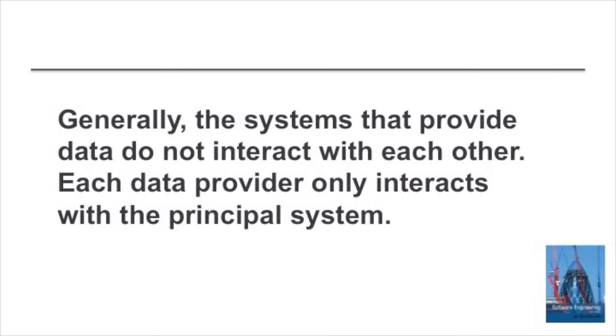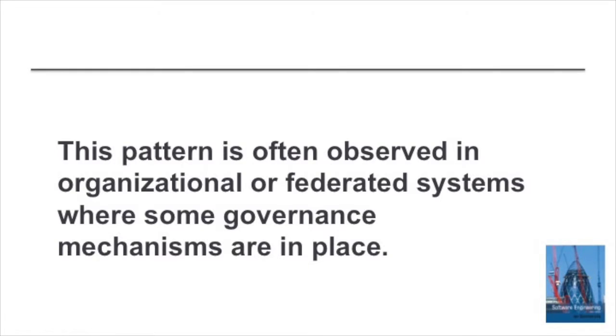The data may be queried directly — there may simply be a query interface between systems — or the data can be downloaded to the principal system periodically. A characteristic of this architecture is the limited interaction: interaction takes place between the principal system and the systems providing the data, and the data-providing systems generally do not interact directly with each other. We see this pattern emerging in organisational or federated systems where there's a governance body that can control the interfaces and the evolution of the systems involved.